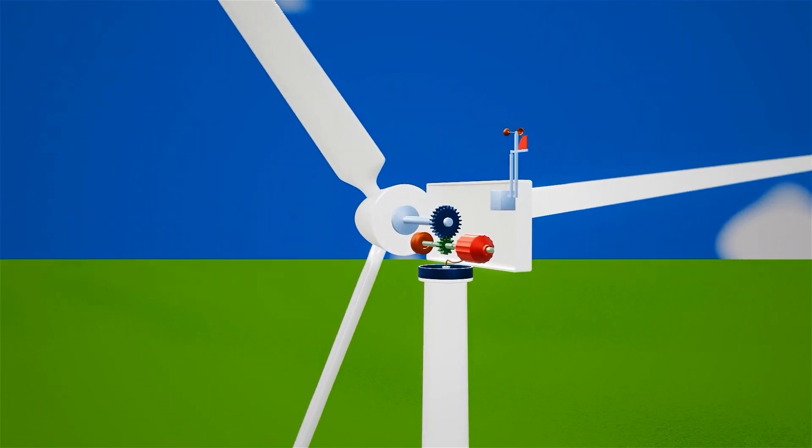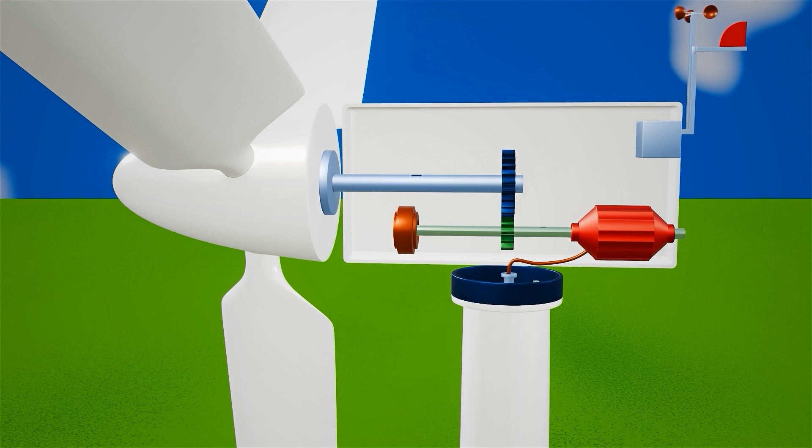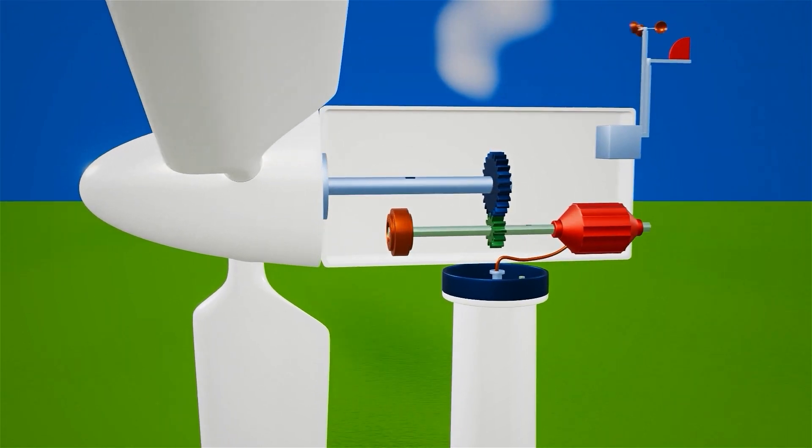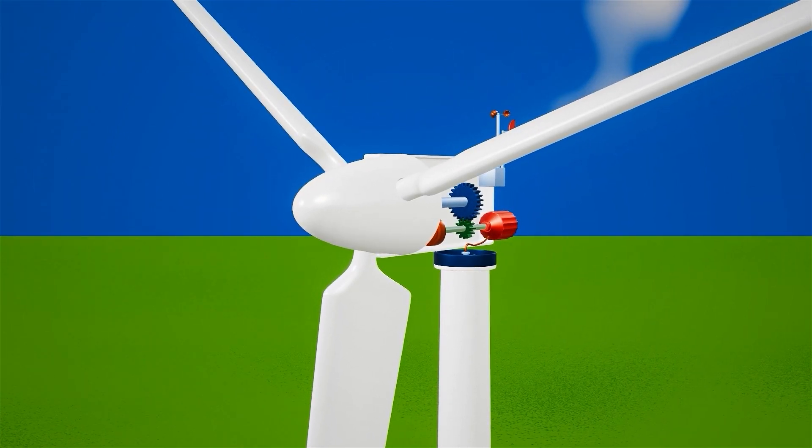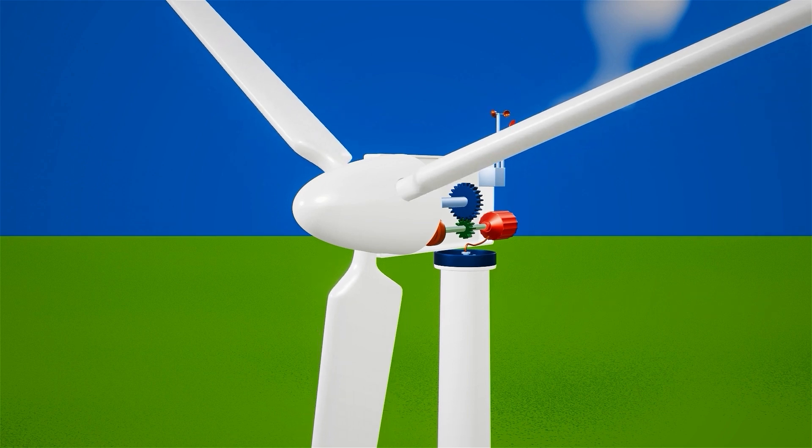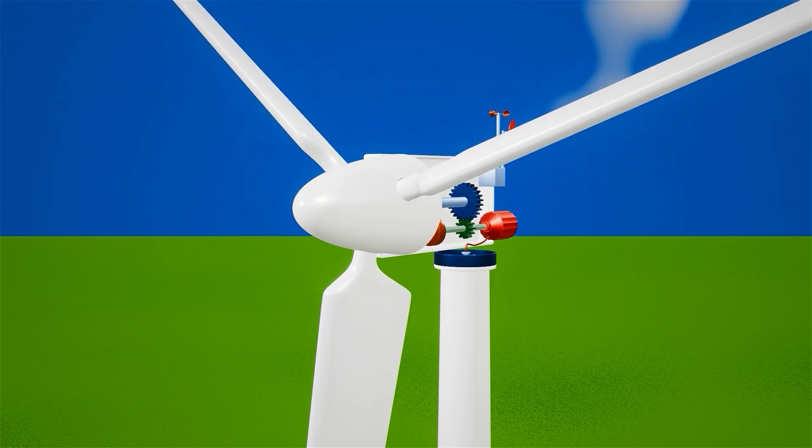In case of high wind speeds, the controller engages the brakes in the nacelle to slow down the blades and prevent damage. Just like changing gears on a bike, the blade pitch mechanism allows the turbine to optimize its performance. By adjusting the angle of the blades, the turbine can respond to different wind speeds and conditions, ensuring it operates efficiently.